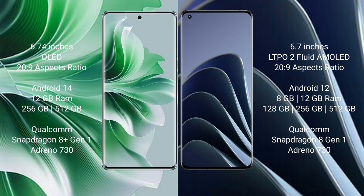Oppo Reno 11 Pro comes with 512GB internal storage, Qualcomm Snapdragon 801 processor, and NGP Antino 730. OnePlus 10 Pro comes with 8GB or 12GB RAM, 128GB, 256GB, or 512GB internal storage, Qualcomm Snapdragon 801 processor, and NGP Antino 730.